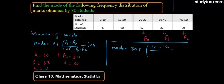So mode equals to 30 plus F1 is 32 minus F0 which is 12, whole divided by 2 times F1 which is 64 minus F0 minus 20, whole multiplied with H.